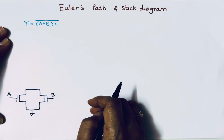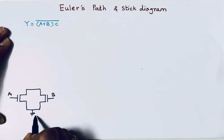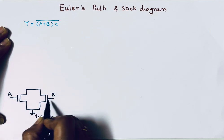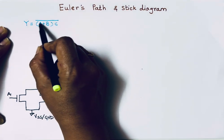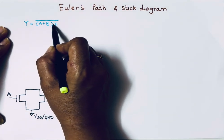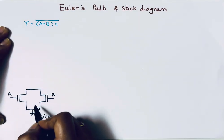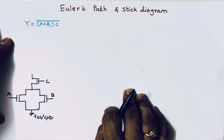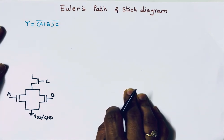This is the pull-down network, so it is connected to VSS or ground. A and B are connected in parallel, and this entire term is in multiplication with C, so we will connect C in series with this circuit. This completes our pull-down network.